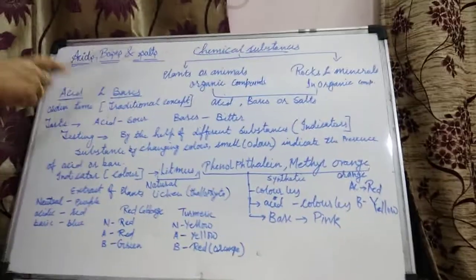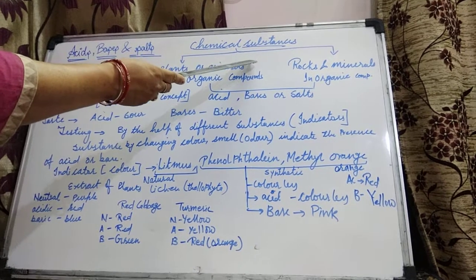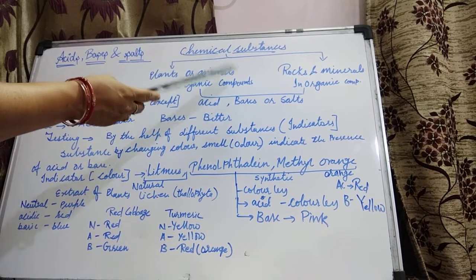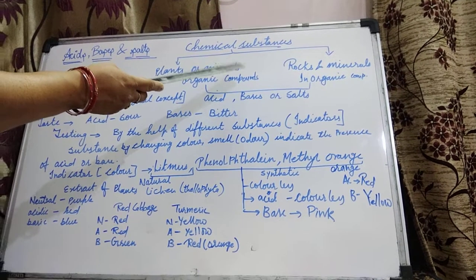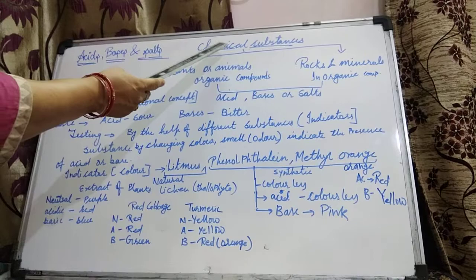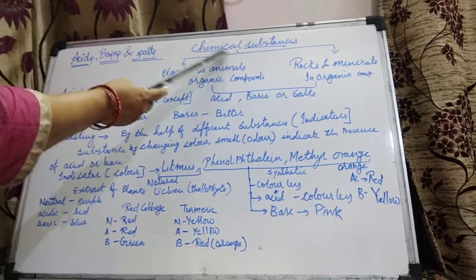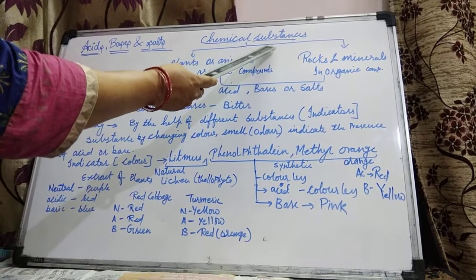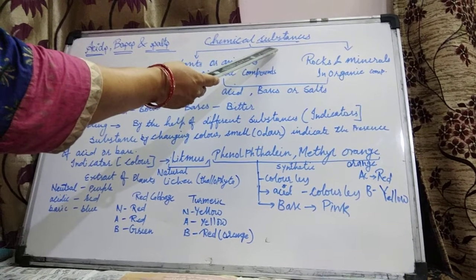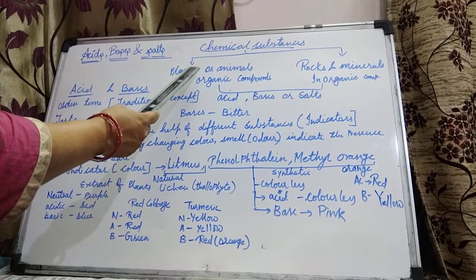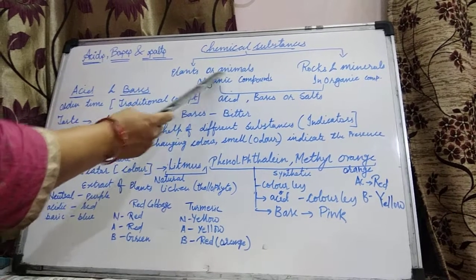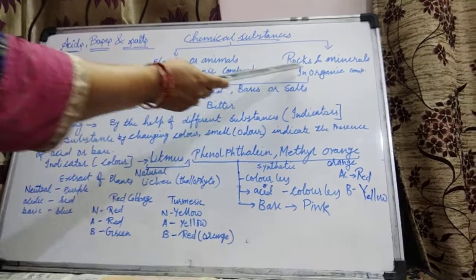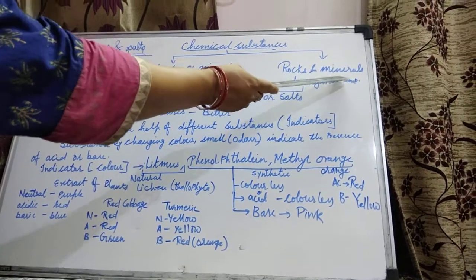These are actually chemical substances. Any acid, any base, any salt — the salt which you are taking daily, that is table salt, NaCl — that is also a chemical substance. So all these are firstly chemical substances, and chemical substances are obtained from two sources: either from plants or animals, that means from living organisms, and from non-living sources, that is from rocks and metals.